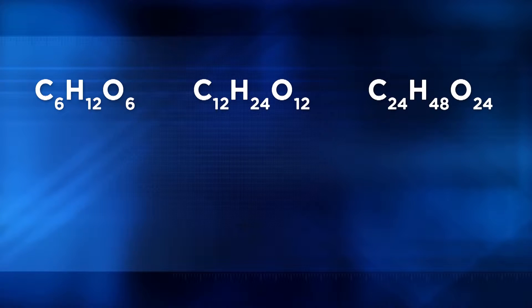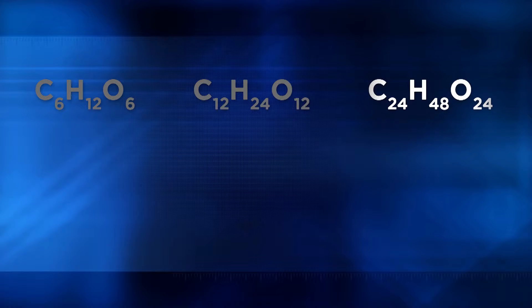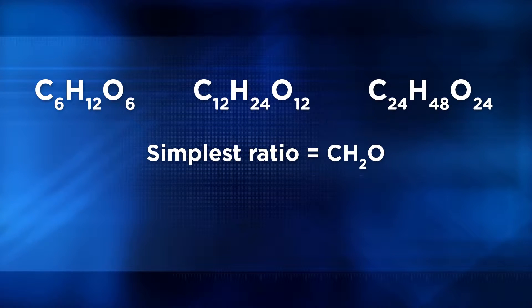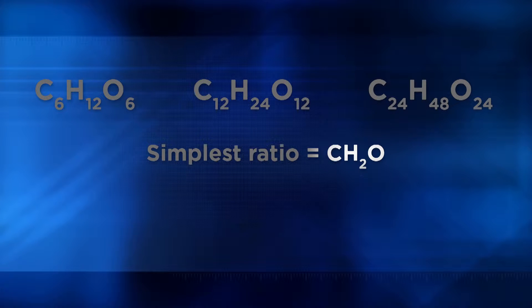Using the measurements of the combustion products, we can easily calculate the percent composition of that substance — how much carbon, hydrogen, or other elements that substance contains. For example, chemical analysis of a carbohydrate might tell us that the compound has equal amounts of carbon and oxygen with twice as many hydrogen atoms. Quite a few compounds exist that share the same simple ratio of elements: CH2O.